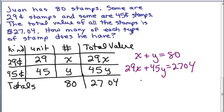I think I'm going to go ahead and do the elimination method. So I'm going to take my top equation right here, and I'm going to multiply it by negative 29 so that when I add the X terms, I'll get a 0.